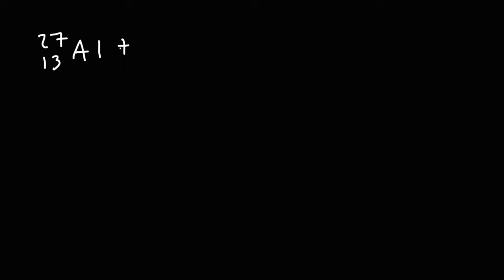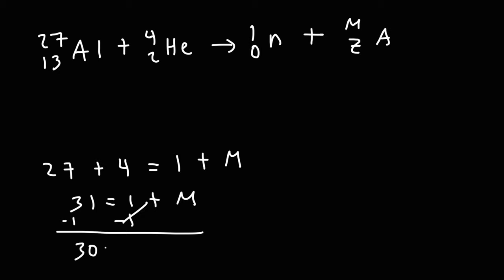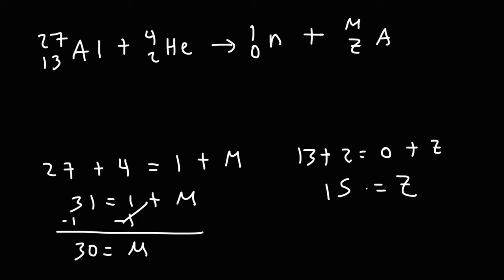Aluminum-27 is bombarded with an alpha particle, and it produces a neutron and a missing element. Starting with the numbers on top: 27 plus 4 is equal to 1 plus M. Adding 27 and 4 gives 31, then subtracting 1 from both sides gives M equal to 30. Focusing on the bottom numbers: 13 plus 2 is equal to 0 plus Z, so Z equals 15. The element with an atomic number of 15 is phosphorus — that's the missing element.